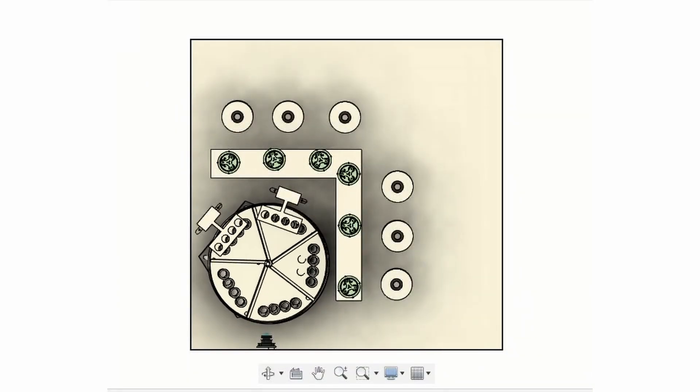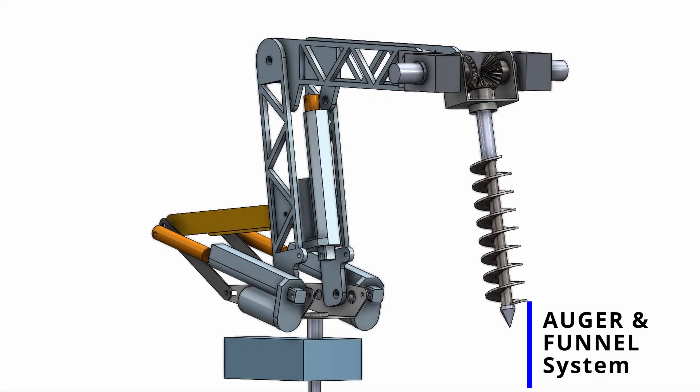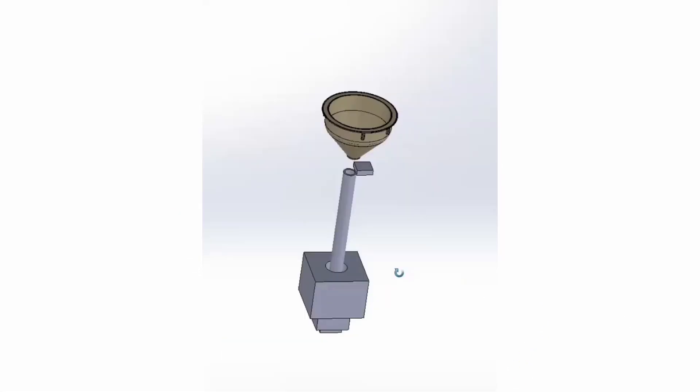We are using a NEMA 17 motor to rotate our carousel and switch sections into various positions for chemical deposition, stirring, or color sensing. We are using a custom-made auger to collect soil from designated sites at a depth of 10 cm below the ground and transport it to the funnel system at the top of the science module.